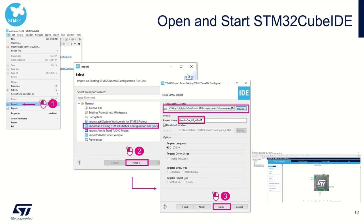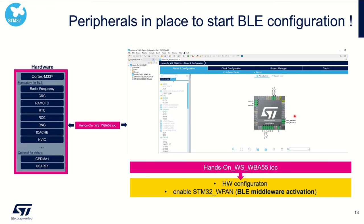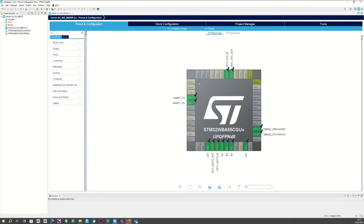At the end of the configuration process, you should get a nice screen with the pinout that has been enabled. Looking at my tool, I've got the CubeMX panel with the hardware configuration done for the STM32WBA55.